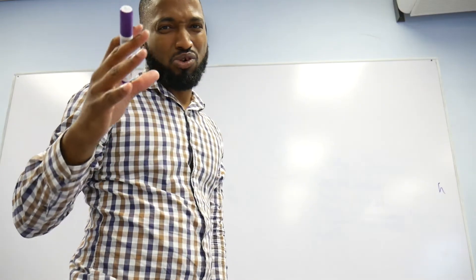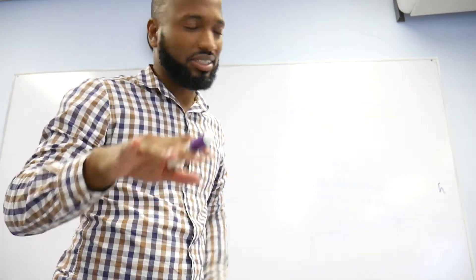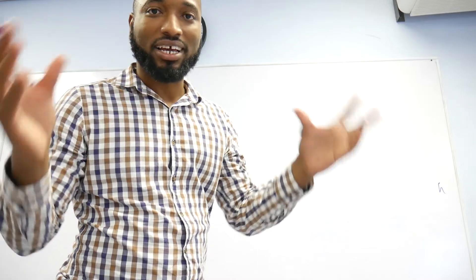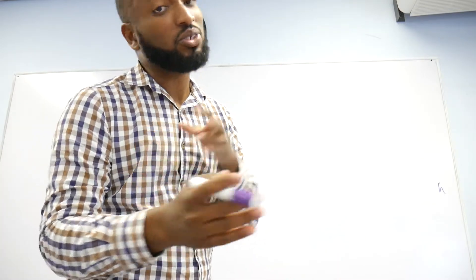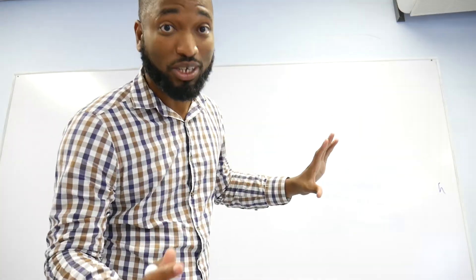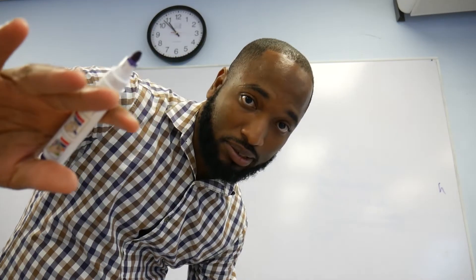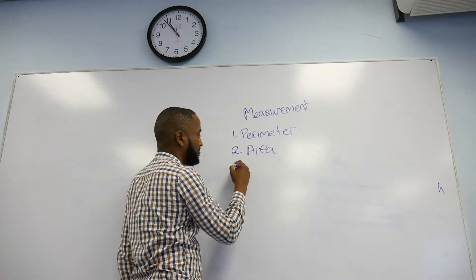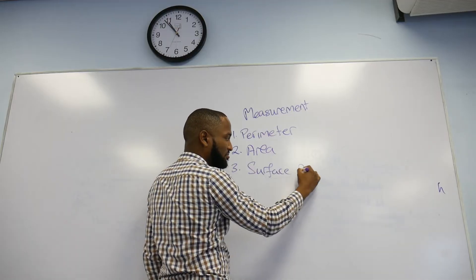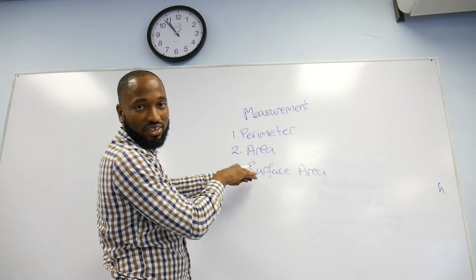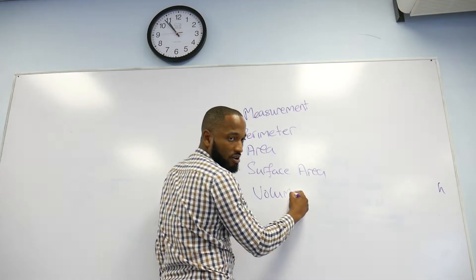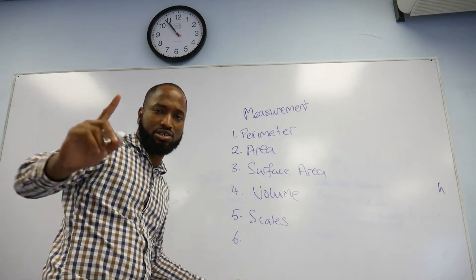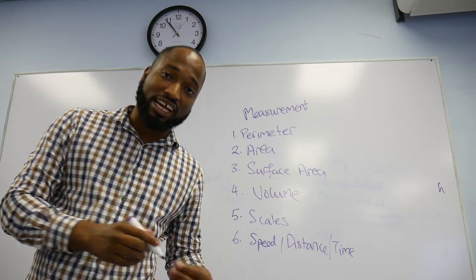CXE will check on about six things in measurements. There are six. When I get a topic, I like to make a list to make it easier for students to understand what they need to study. For measurement, you want to study these six things: perimeter, area, surface area, volume, scales, and also speed, distance, and time.